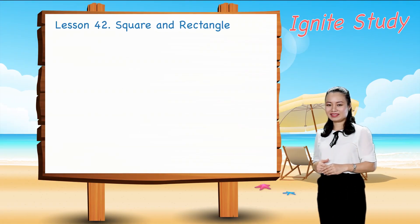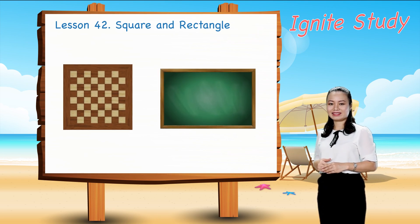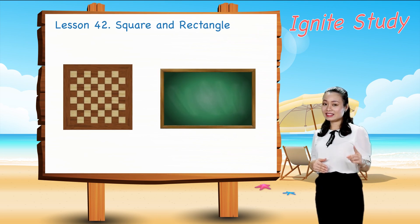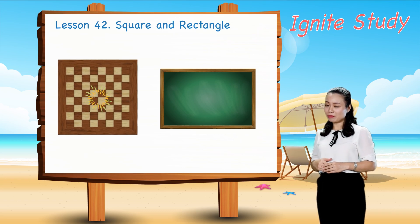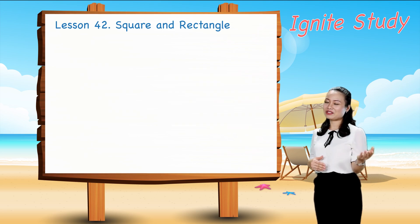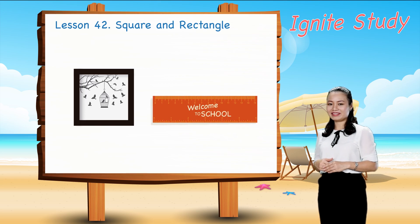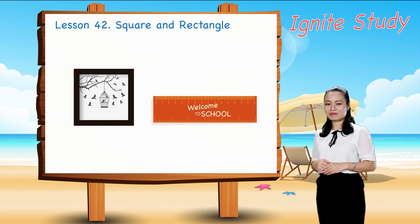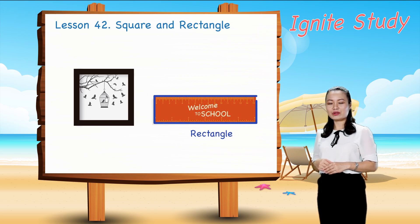Next, which shape is a square? The shape of the chessboard is a square. Which shape is a rectangle? The shape of the ruler is a rectangle.